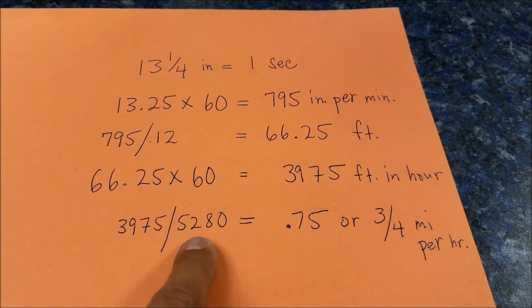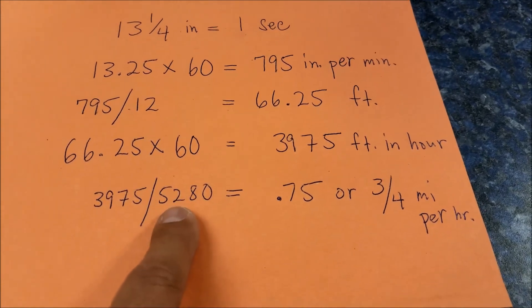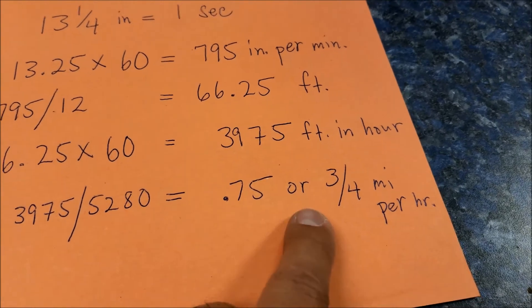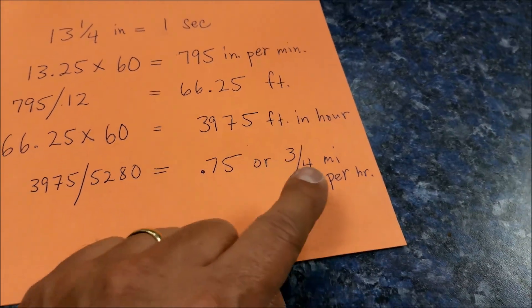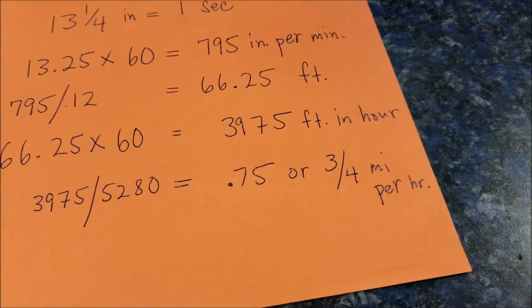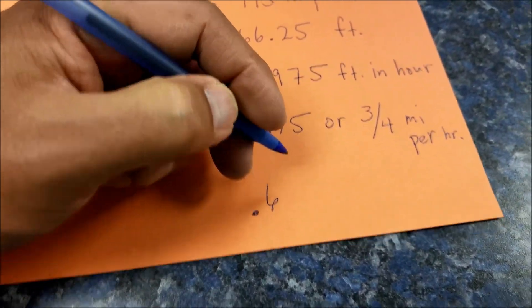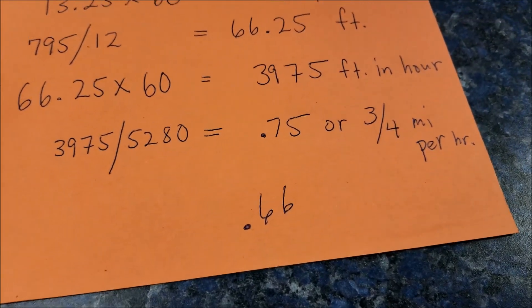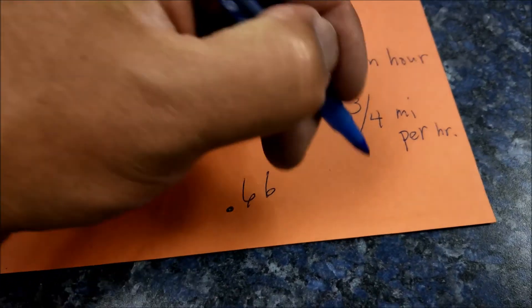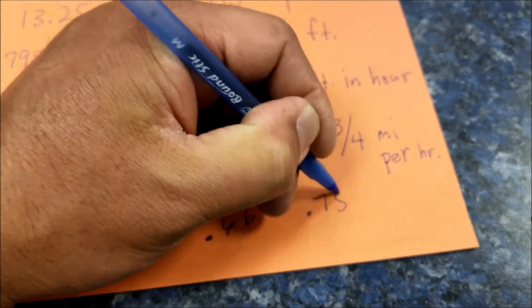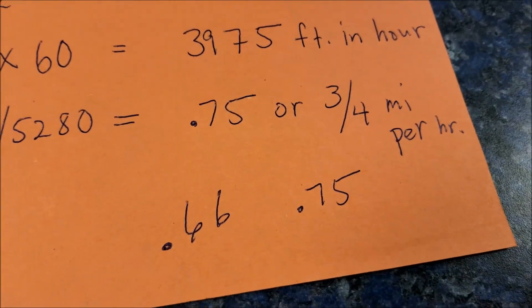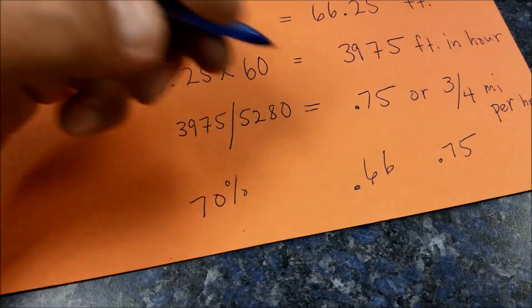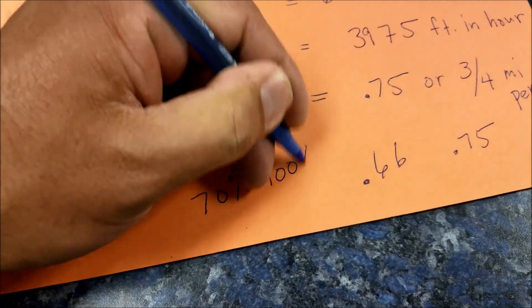I took this number, divided it by a mile or the 5,280 feet, and we get 0.75 or three fourths of a mile per hour. If you remember yesterday at 70% speed it was 0.66 miles per hour and today we get 0.75 miles an hour. So that is the difference of having it at 70% speed as compared to 100% speed.